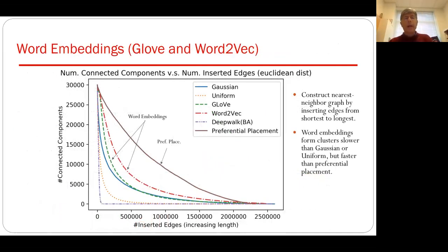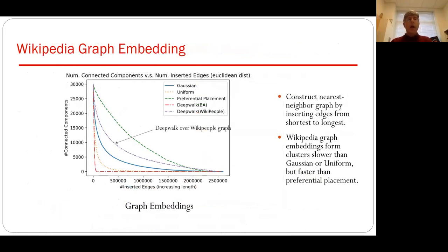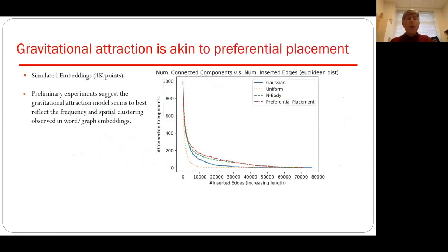Looking at the experimental embeddings: for word embeddings, looking at two types — W2V and GloVe — they seem to sit between the Gaussian and the preferential placement model. When we look at the Wikipedia graph, it also lies between the Gaussian and the preferential placement model. The gravitational attraction model generates things that are also kind of between preferential placement and Gaussian, though closer to preferential placement. So bottom line: do I have a generative model that fully explains these things yet? No, but the gravitational attraction model seems to be the one that best explains some of what we see.